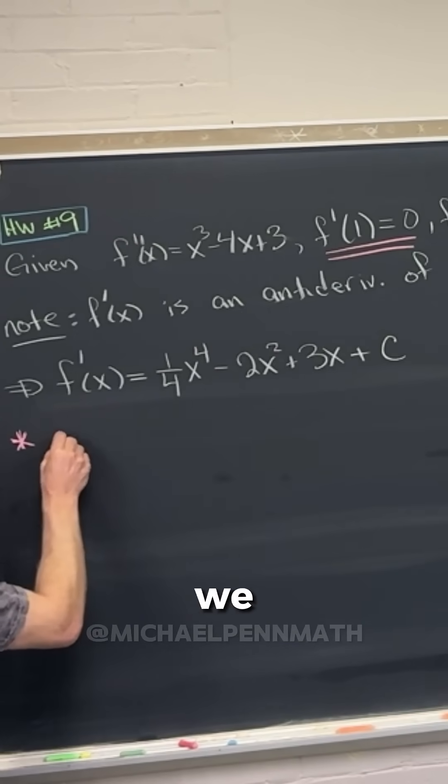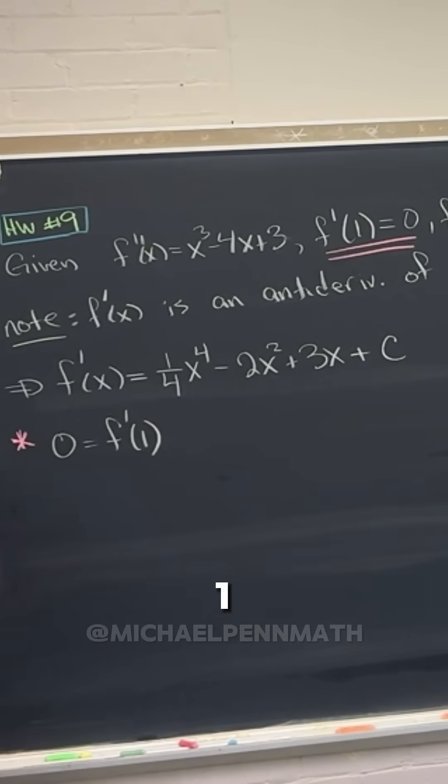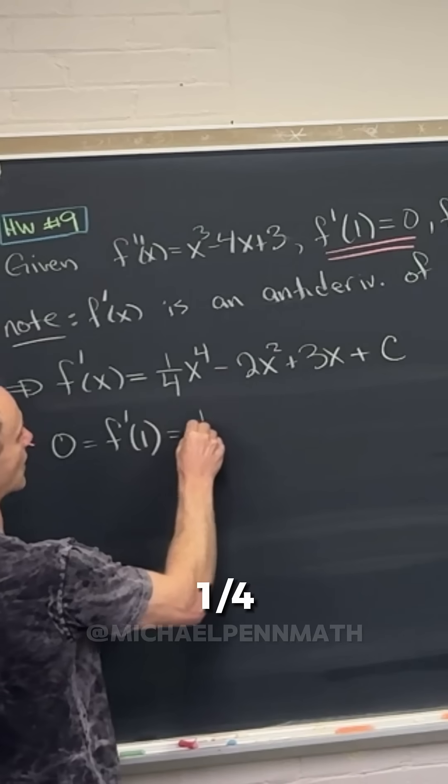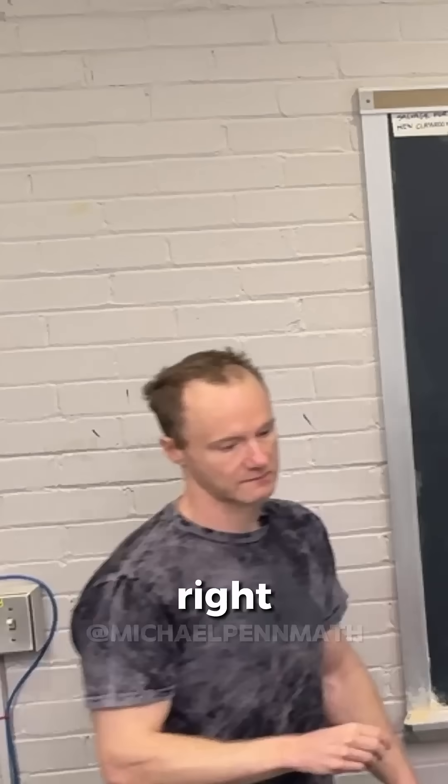If we plug one into that, we should get zero. So that gives us the equation zero is equal to f prime of one, which is also equal to a quarter minus two plus three plus a constant.